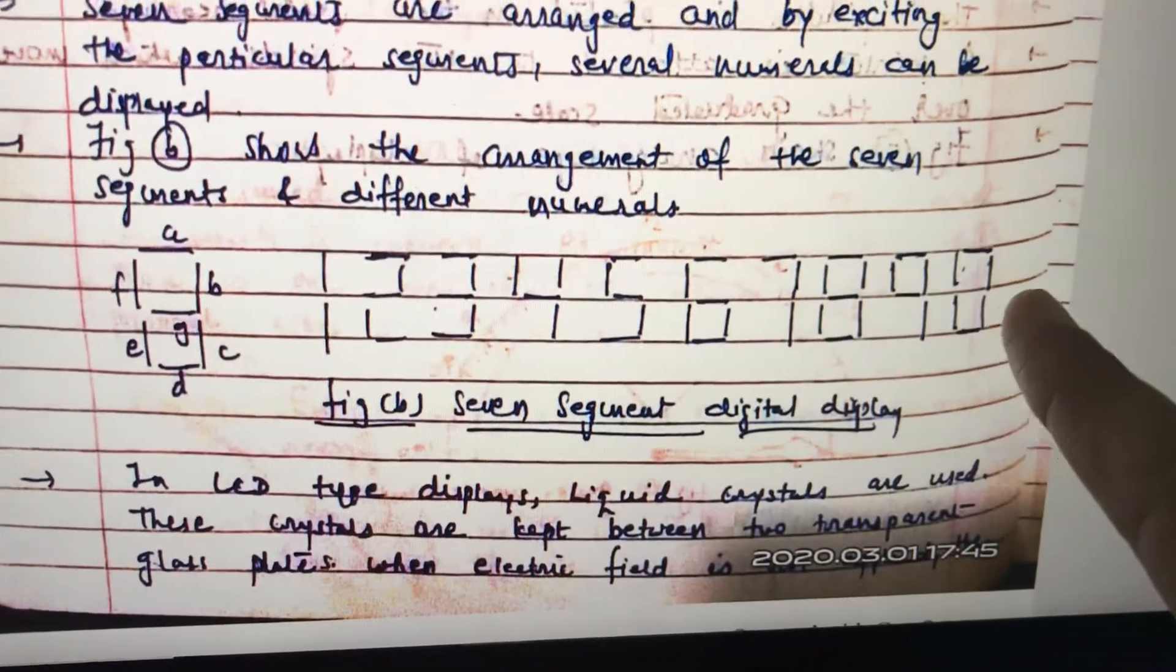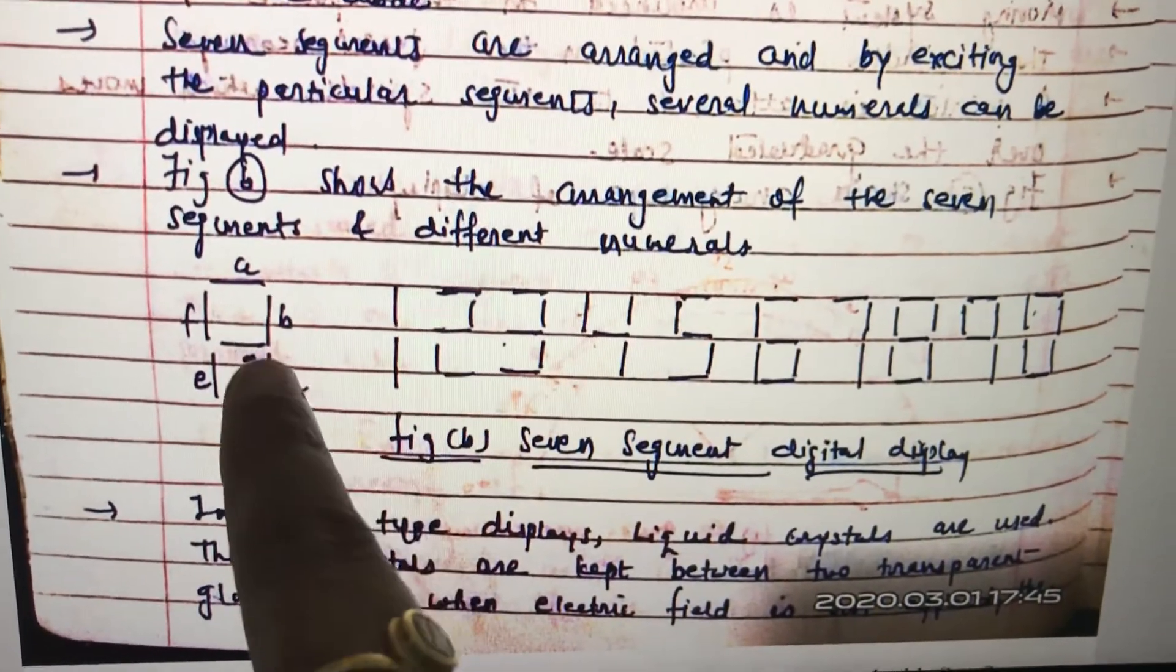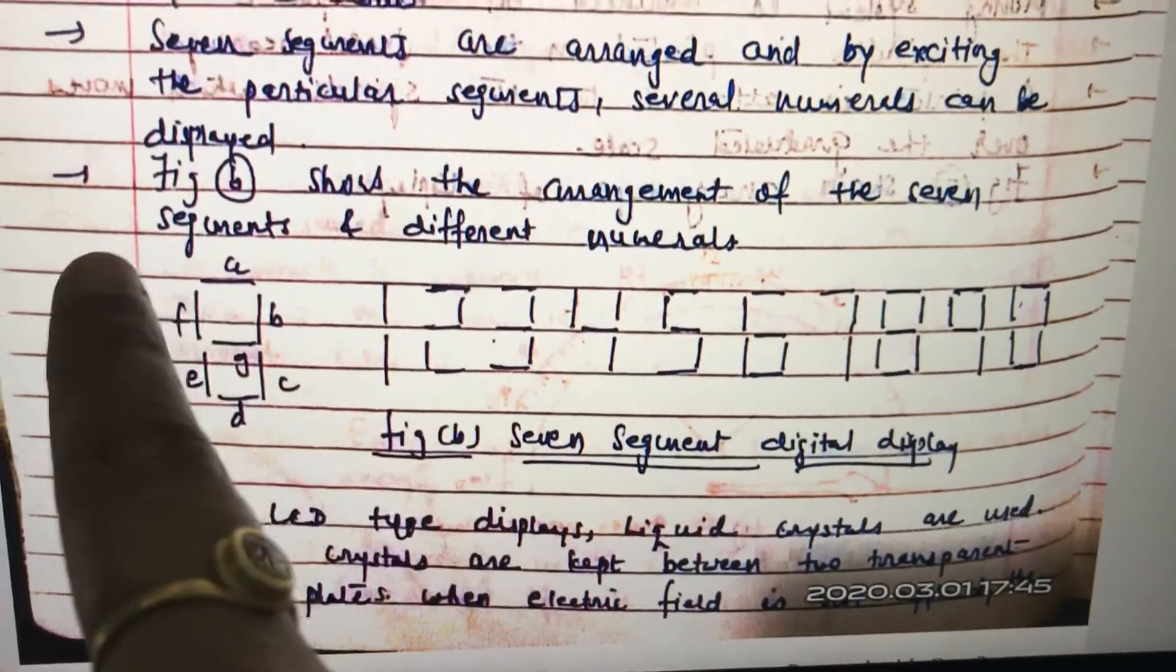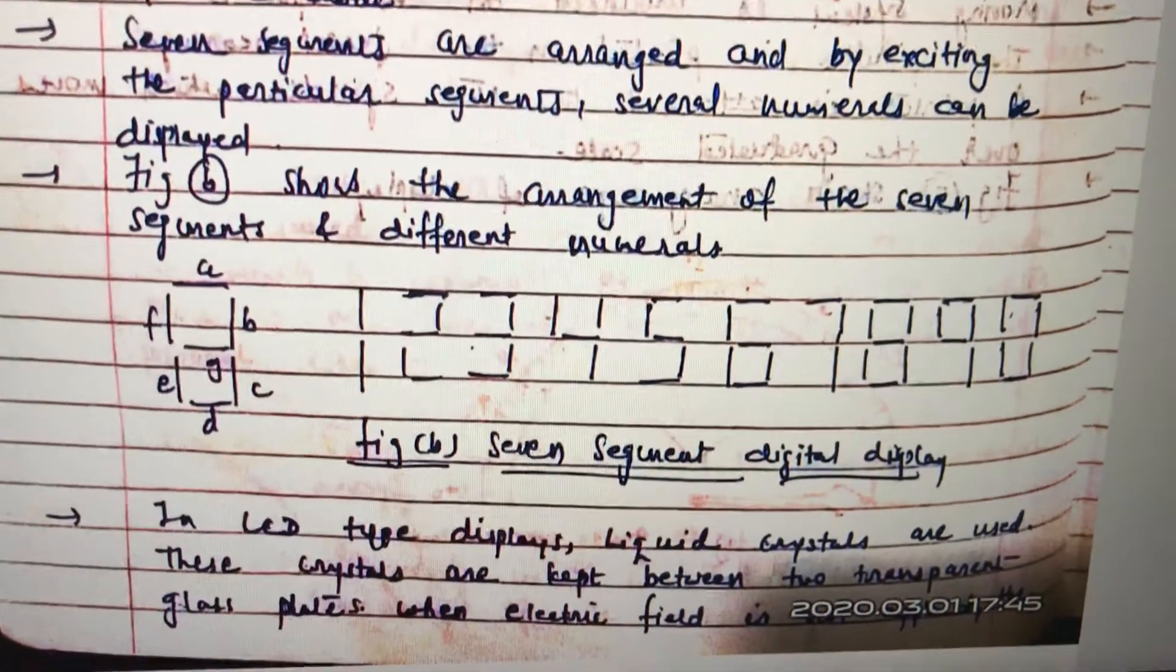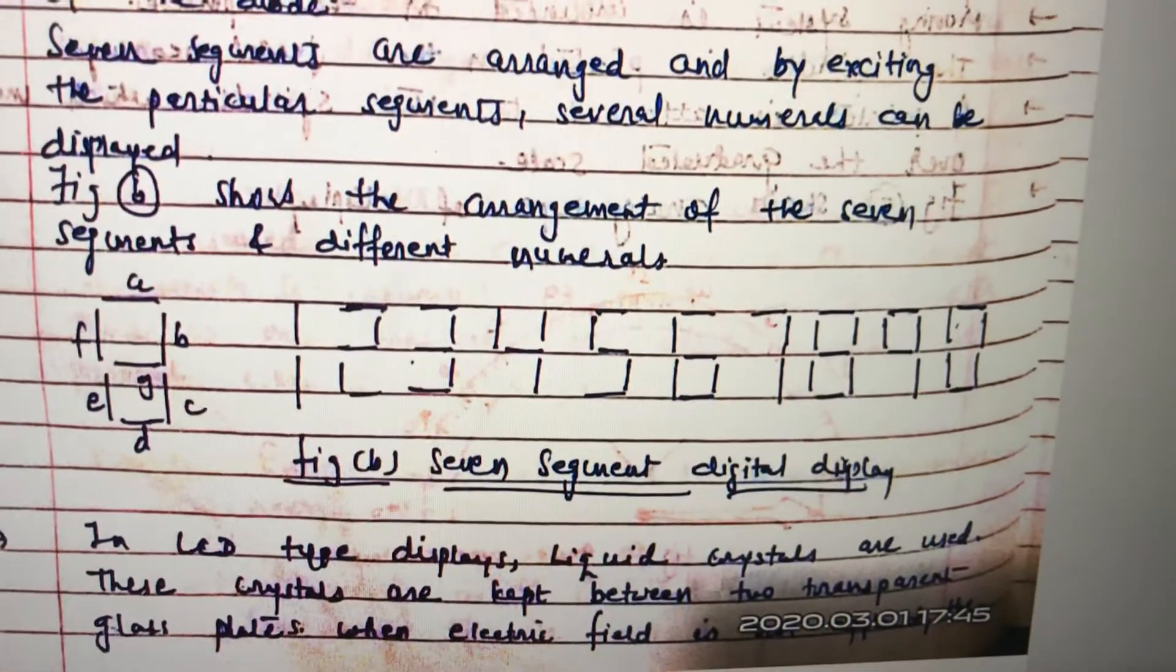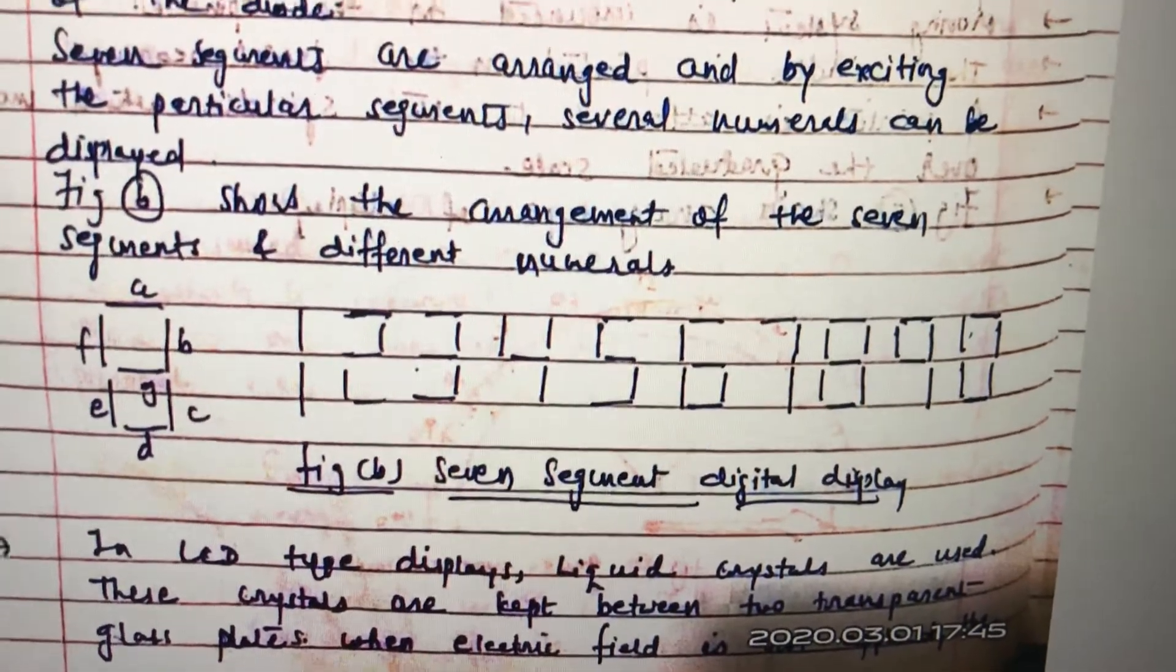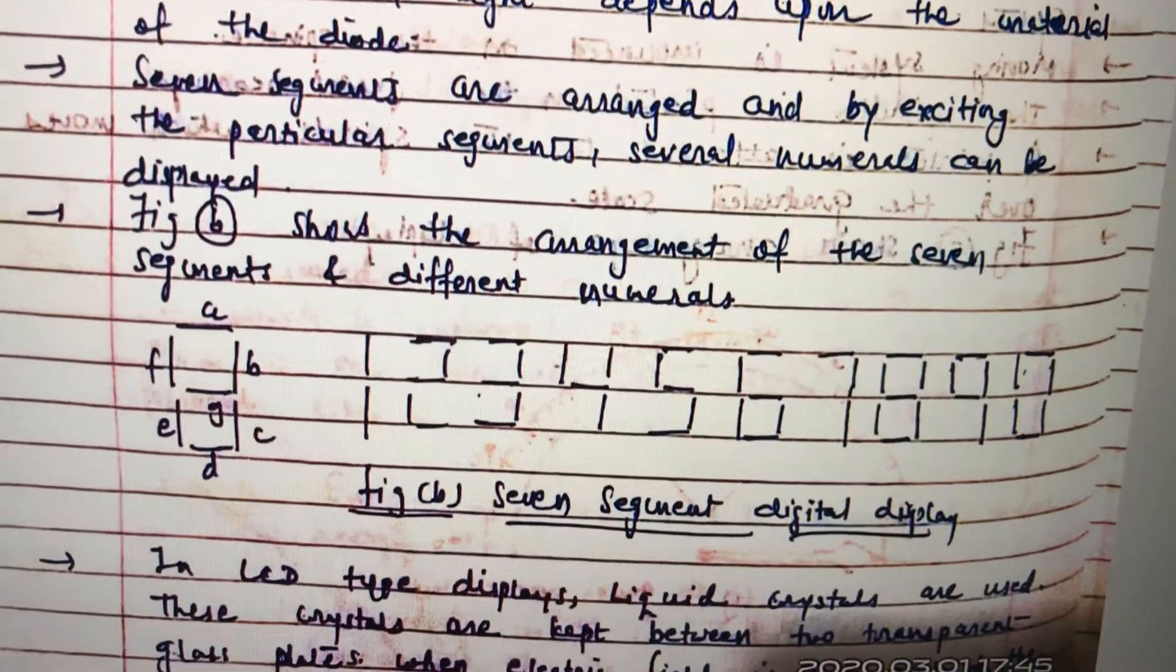When you are trying to write one, two, three, four, five, six, seven, eight, nine, and zero, it will work this way. If it is one, there should be b and c - just these two diodes will be on forward bias, others will be on reverse bias. For displaying two, a, b, g, e, and d will be in forward bias, so your LED will glow and two will be displayed on screen. For three, a, b, g, c, and d will be glowing, all others will be off.